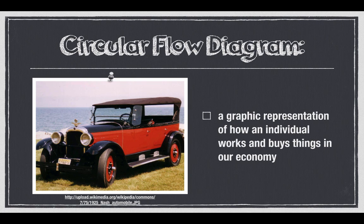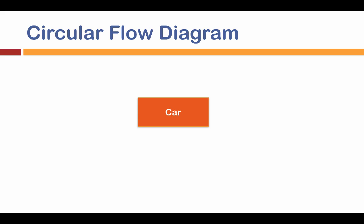The circular flow diagram is a graphical representation of how an individual works and buys things in our economy. A perfect circular flow diagram is going to be one thing short, and you'll see what we add at the end. What we're talking about is how you and I can afford to go to the store, how the store got the things we want to buy, and how a factory wants to produce that by paying workers to work. We're going to do the circular flow diagram for an automobile — it doesn't matter what type of car.